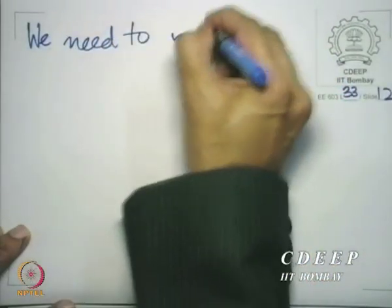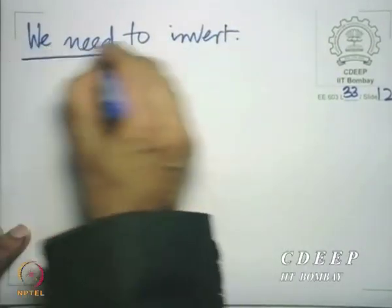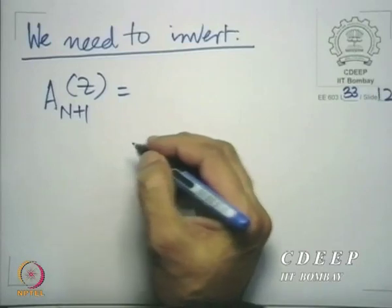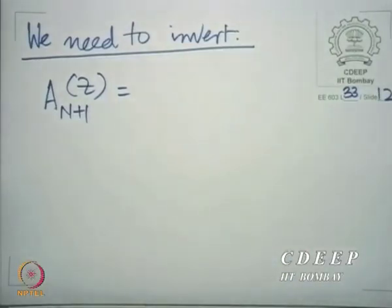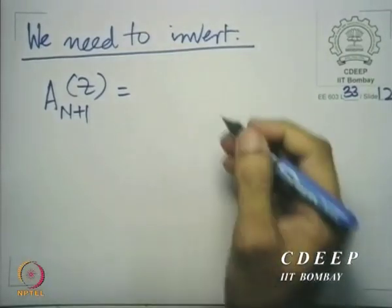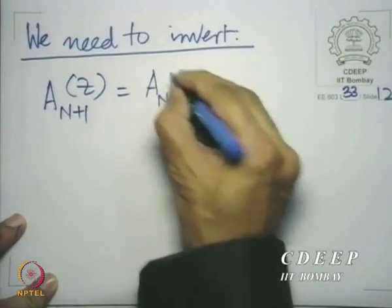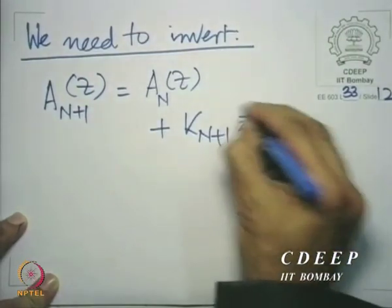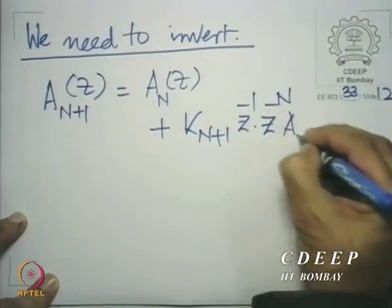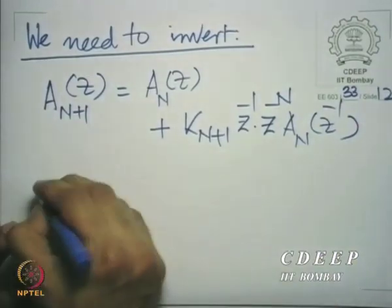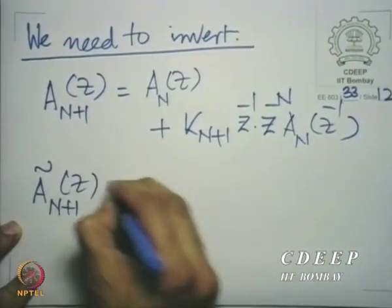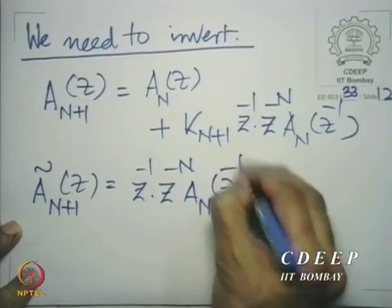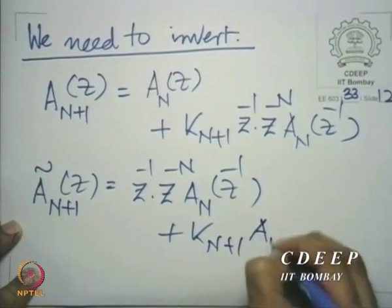We need to invert the following. You see a_{n+1}. Let us write down the recursion, but this time let us note that we already have a relation between a_n and a_n tilde. So, a_{n+1}(z) is a_n(z) plus k_{n+1} z^{-1} z^{-n} a_n(z^{-1}). Similarly, a_{n+1} tilde(z) is z^{-1} times z^{-n} a_n(z^{-1}) plus k_{n+1} a_n(z).